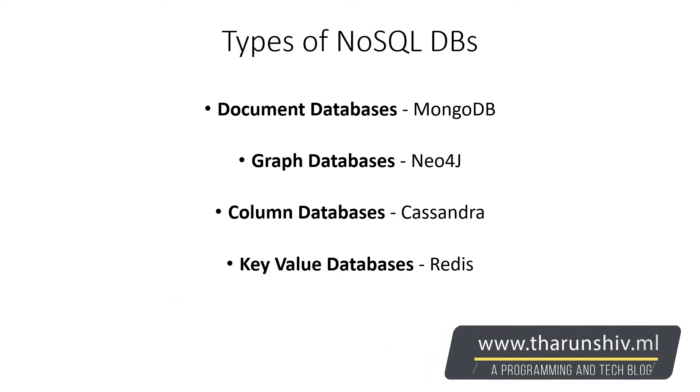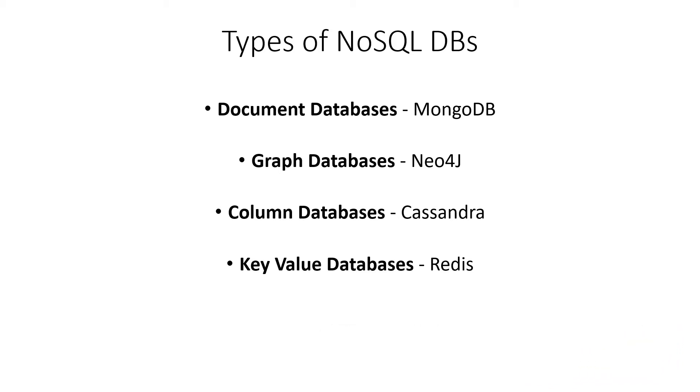So finally, we are here with the types of NoSQL databases. These are not the only four types, but they are the main four. You may come across one or two more types in other books and forums, but these are the main four. The first one is a document database. Document databases pair each key with a complex data structure known as a document. These documents can contain many different key-value pairs, or key-array pairs, or even nested documents — they are kind of similar to JSON.